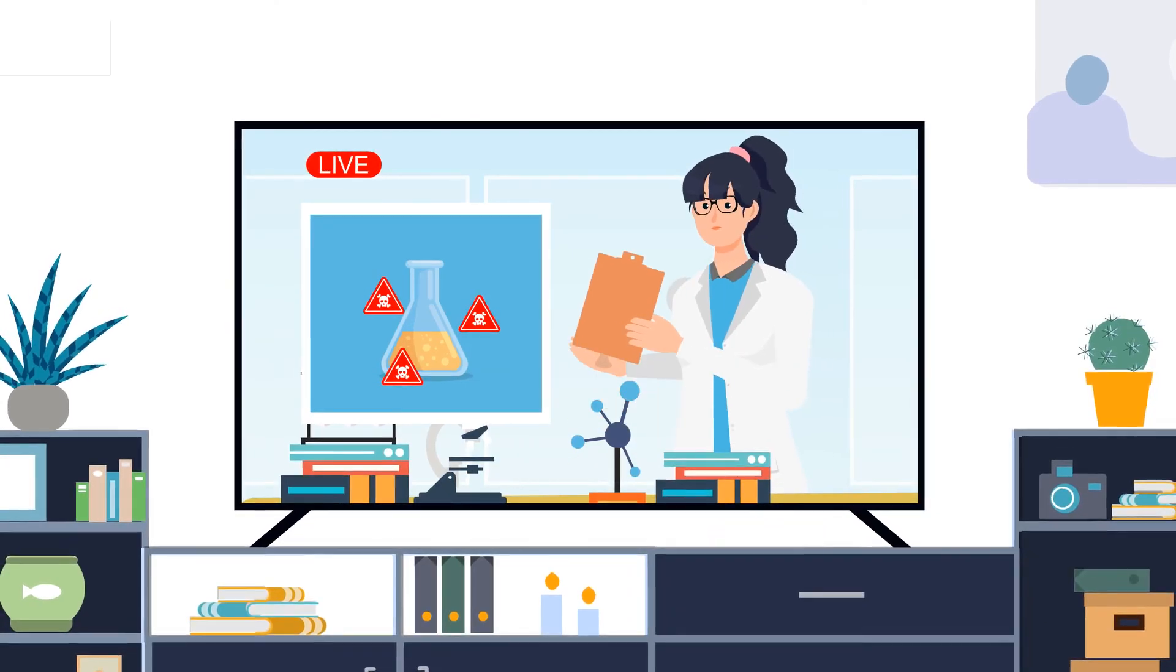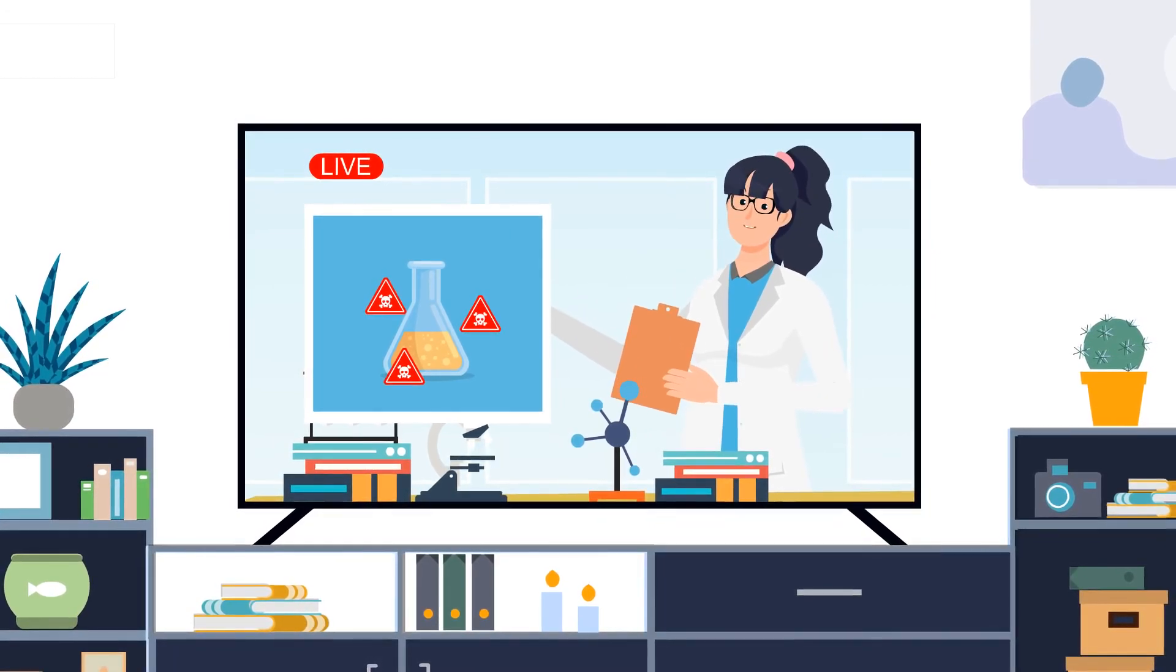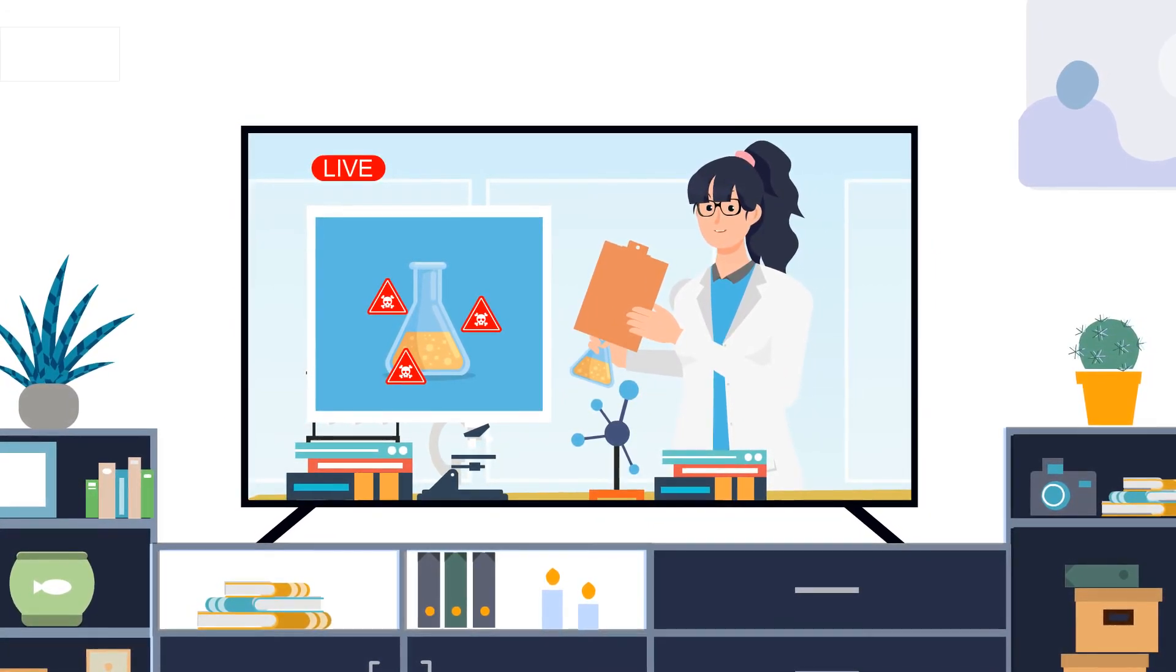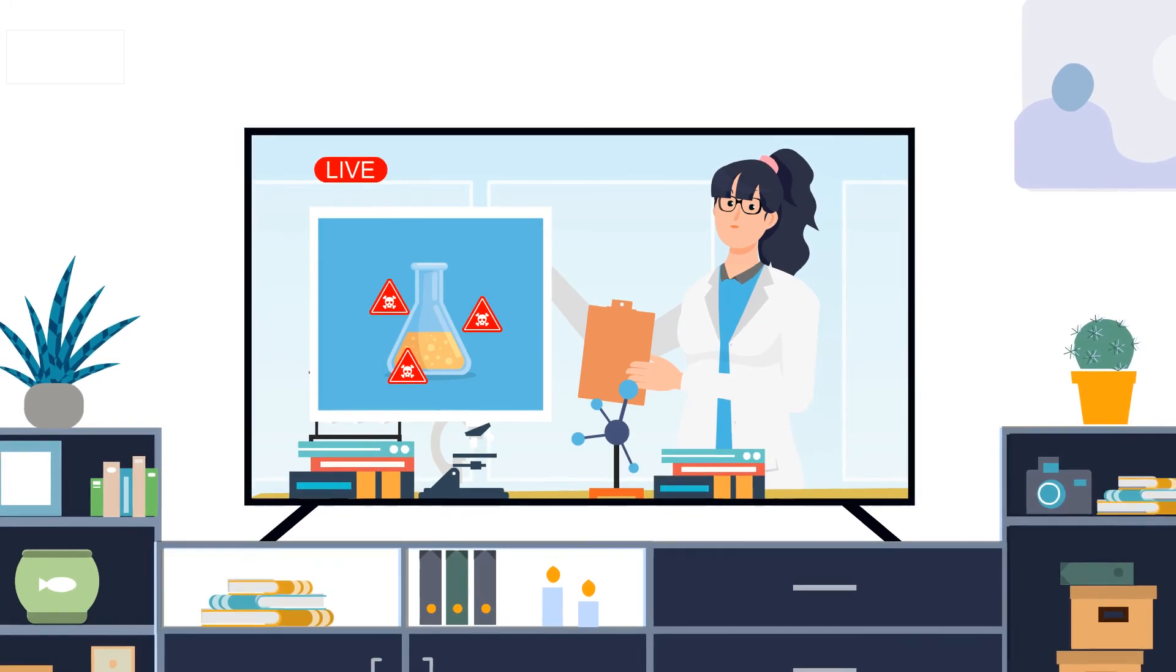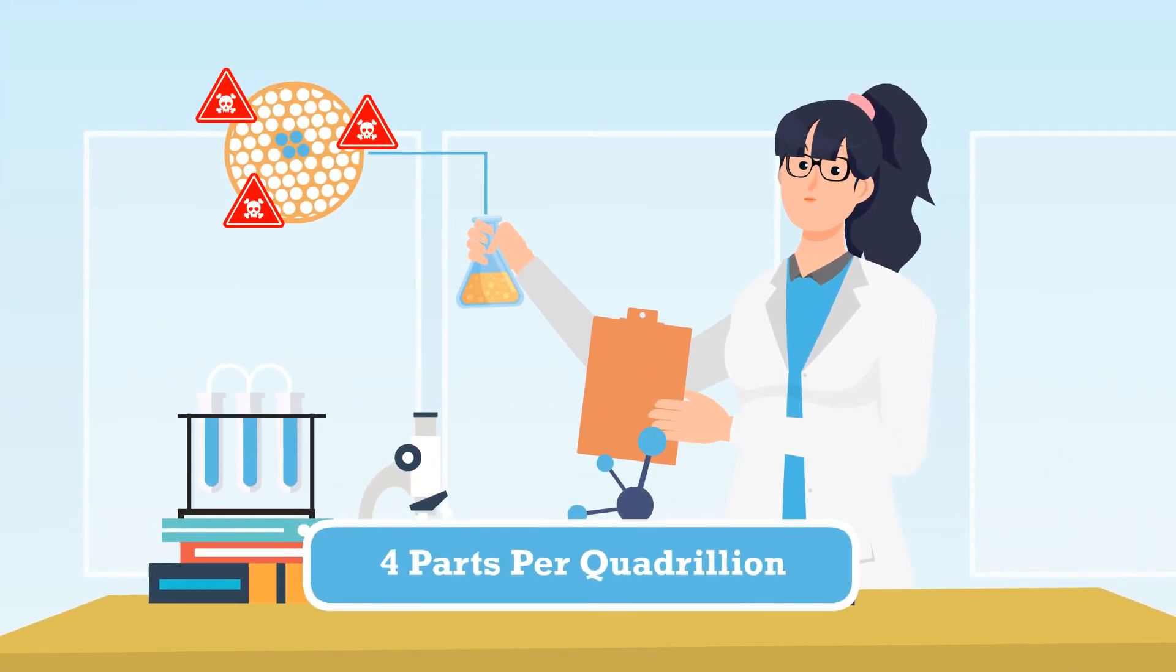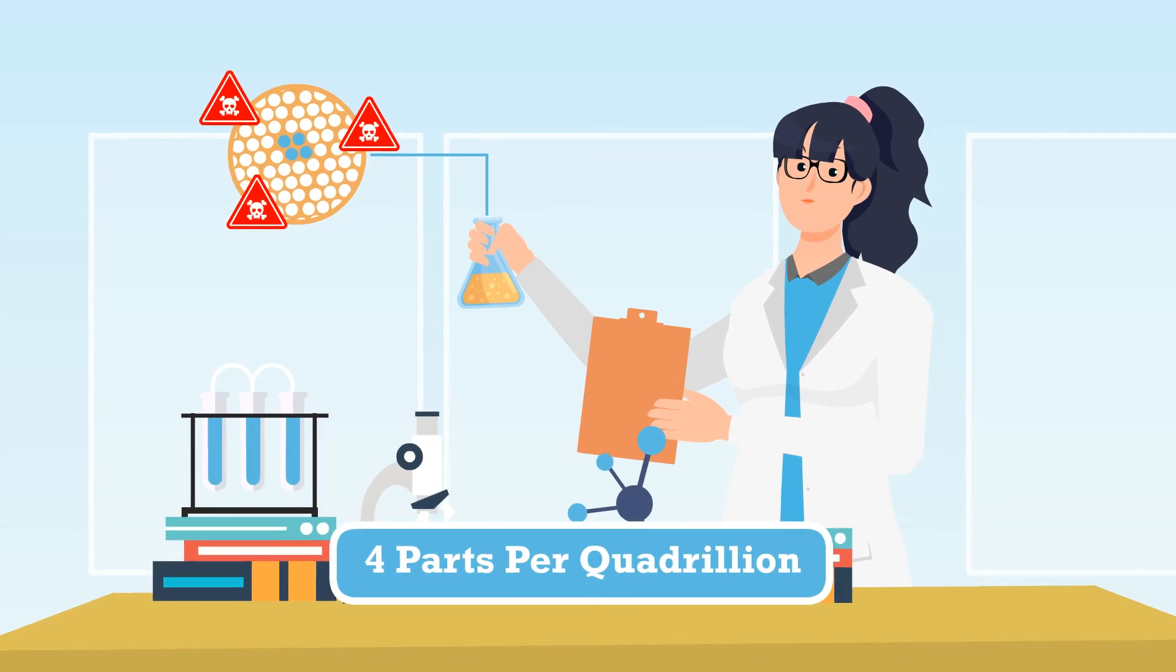One part per trillion is like just one drop of that contaminant being enough to pollute an entire lake. Just this year, the EPA announced that perfluorinated chemicals are far more toxic than previously thought.